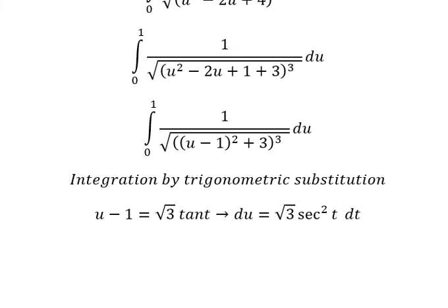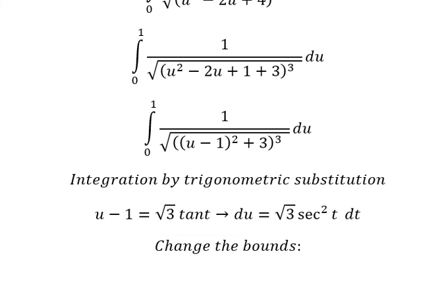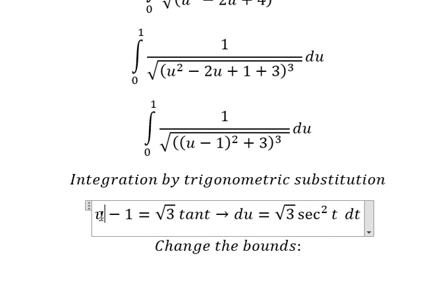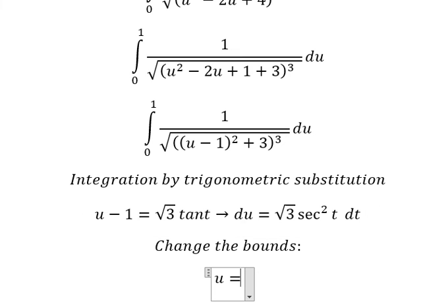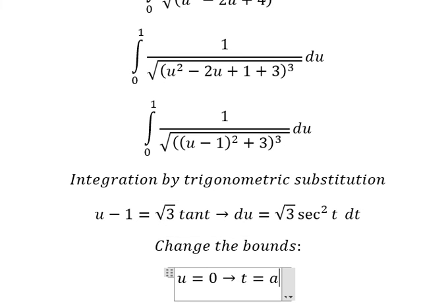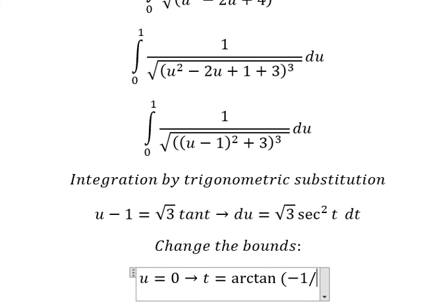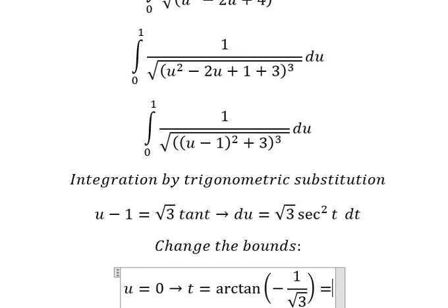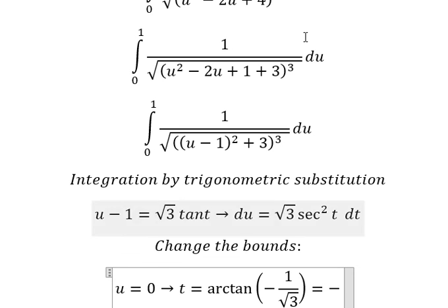Next we need to change the bounds. When u = 0, I substitute to find the value of t. Dividing both sides by √3, we get t = arctan(-1/√3), so t = arctan(-1/√3), which equals -π/6.